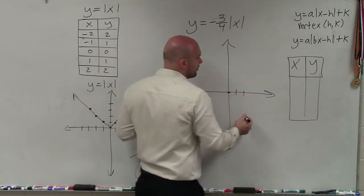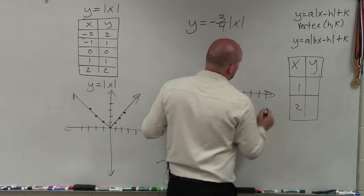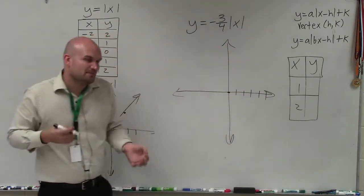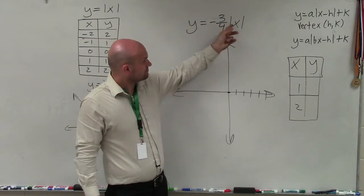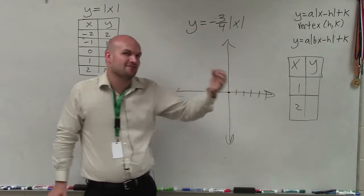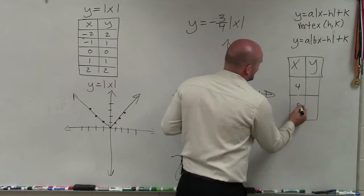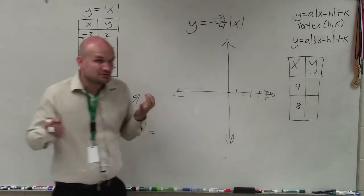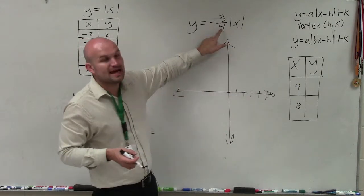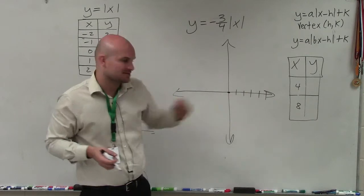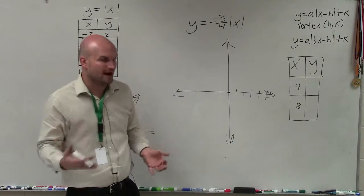So let's just graph two points to the right. I'm not going to pick 1 and 2, because I don't really want to graph negative one-third. I'd rather be graphing integers. So I'm going to pick 4 and 8. You can pick 1 and 2, there's nothing wrong with that. But by picking 4 and 8, the reason I chose these is because my denominator 4 is divisible into both of those numbers. So it's just going to make my graphing easier, because I'll be graphing integers rather than fractions.